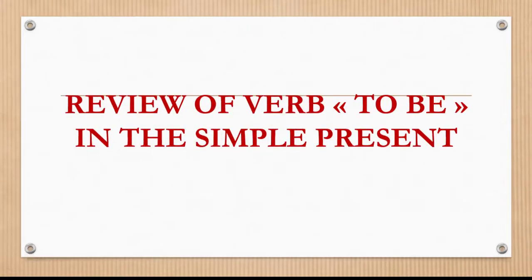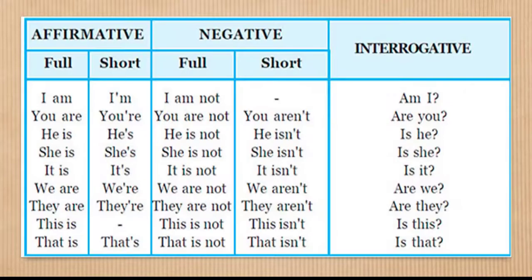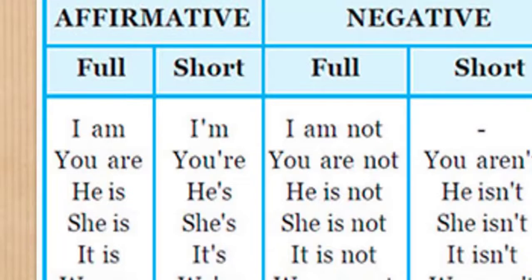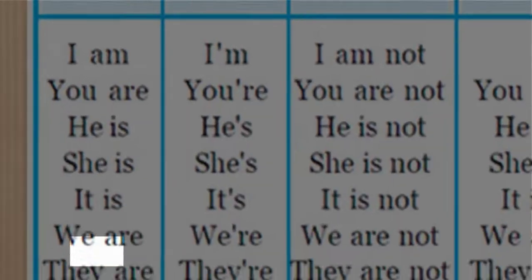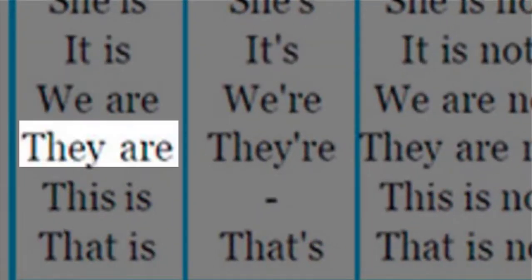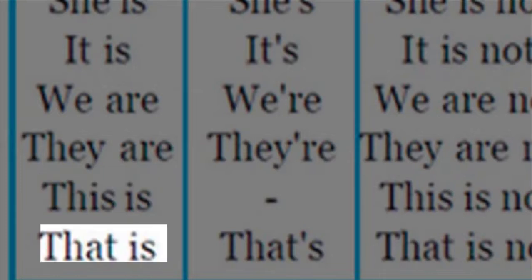Let's start with review of verb to be in the simple present. In the affirmative form, full form: I am, you are, he is, she is, it is, we are, you are, they are, this is and that is.